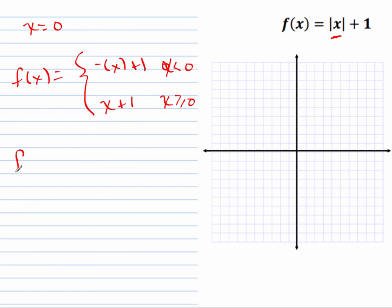Let me rewrite this: it equals negative x plus one when x is negative, and x plus one when x is greater than or equal to zero. When x is zero, this function equals one. It has a slope of one, so it looks like this.